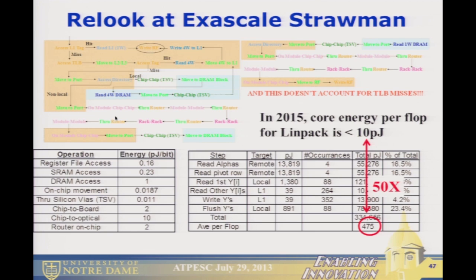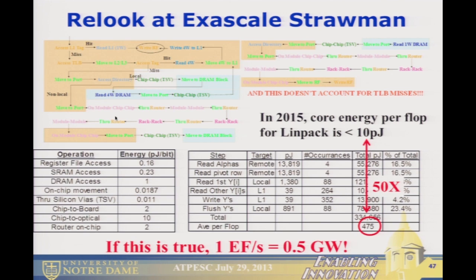What this says is there is almost no more interest from my perspective in worrying about the architecture of a core — that's almost irrelevant. It's how you put it together in terms of the rest of the system. Because if we really accounted for everything, that Exascale estimate of 68 megawatts was off — it was more like half a gigawatt.